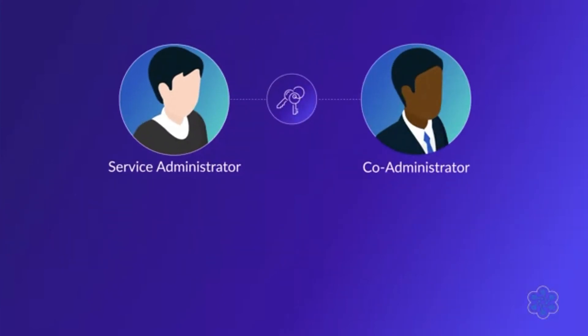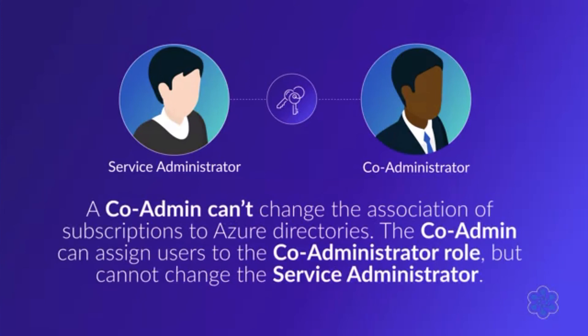A co-administrator has the same access as the service administrator. However, a co-admin can't change the association of subscriptions to Azure directories. The co-admin can assign users to the co-administrator role but cannot change the service administrator.